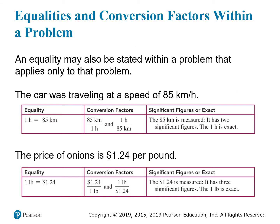Conversion factors are a very powerful tool in chemistry and physics, and they come in all shapes and sizes. Sometimes the context of a problem will tell you a conversion factor that applies only to that problem. For instance, if you are talking about a situation where a car is traveling at a speed of 85 kilometers per hour, you can think of that speed as a way to convert between distance and time. If you drive at that speed for one hour, you know that you've traveled 85 kilometers. If you travel 85 kilometers at that speed, you know it took you one hour.